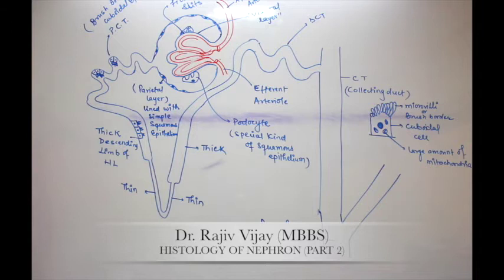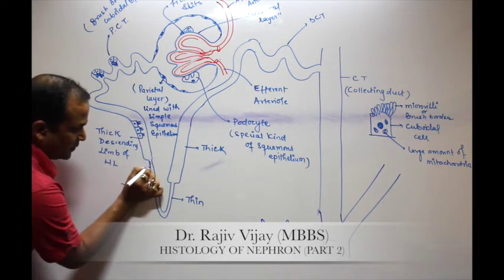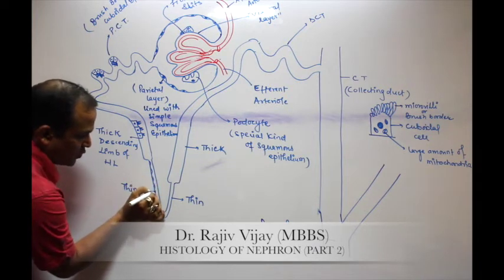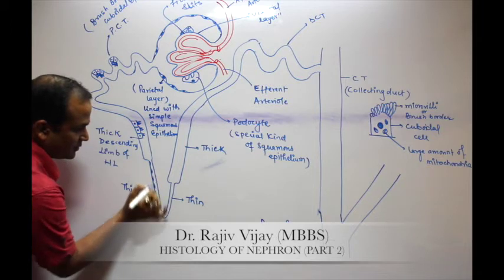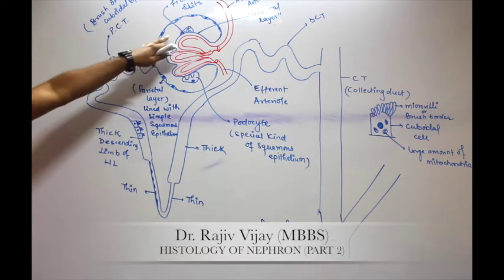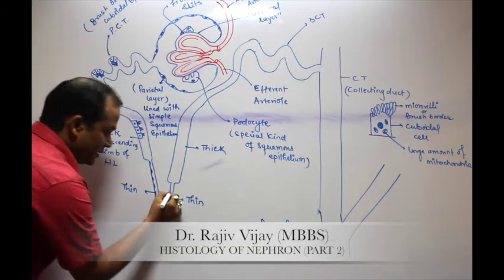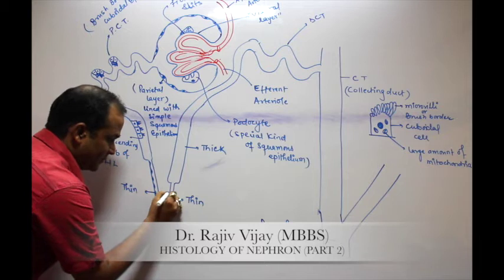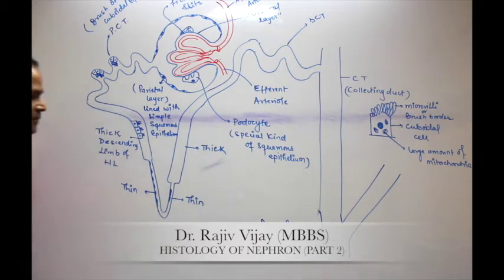In the case of the thin segment, cuboidal epithelium is completely replaced by squamous epithelium — the same squamous epithelium that lines the parietal layer of Bowman's capsule. So the thin segment contains squamous epithelium.